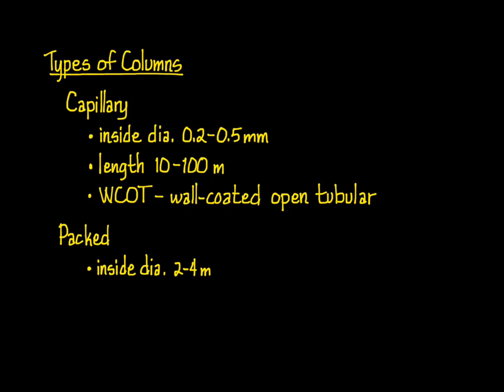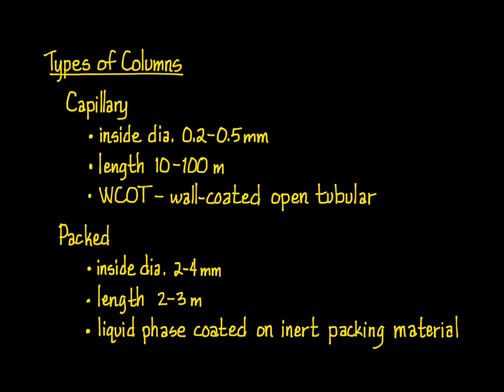Packed columns, in contrast, have larger inside diameters, usually in the 2 to 4 millimeter range, and are considerably shorter, just a few meters. They're called packed because they're filled with small particles in an inert packing material, usually diatomaceous earth, on which the liquid phase is coated. The packing is porous, and the carrier gas can move the mixture being analyzed through and around the particles as it travels through the column.